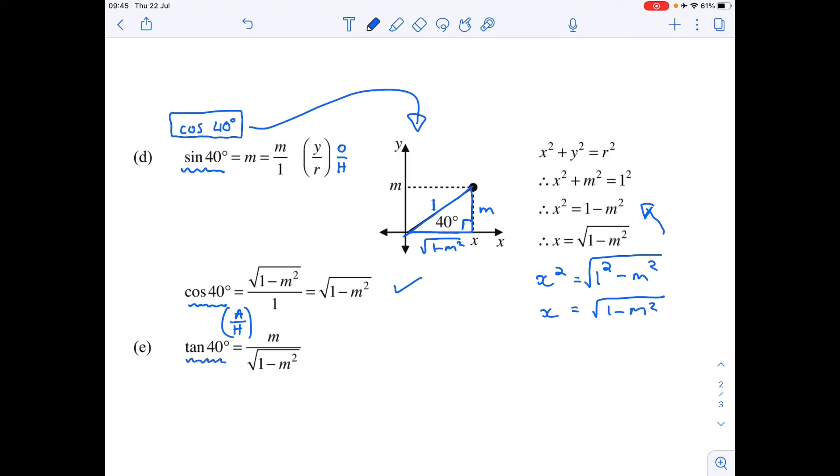Tan of 40, we've got the angle right, which is 40, but tan now is going to be opposite over adjacent. And that's how we end up with m over 1 minus m squared.